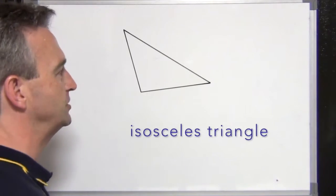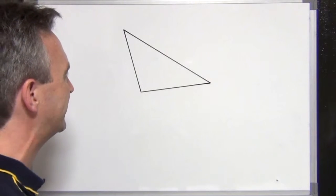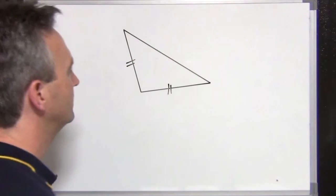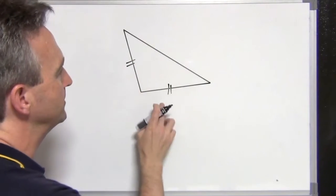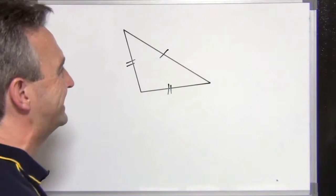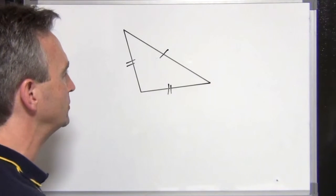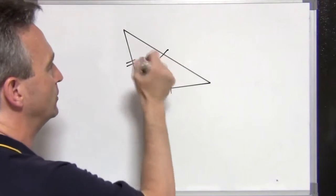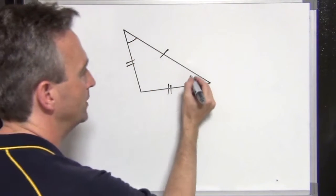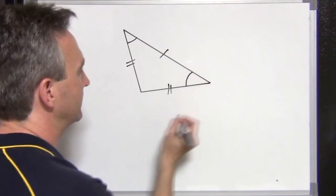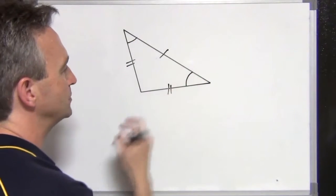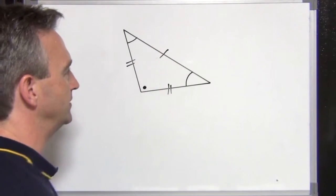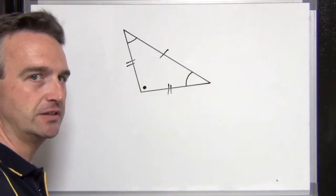Another type of triangle is an isosceles triangle. An isosceles triangle has two sides that are equal. The two equal sides are shown with matching tick marks, and the third side is different. It can be proven for an isosceles triangle that where we have two sides equal, the two base angles are also equal — though we're not going to prove that today. So two sides are equal and two angles are equal, with a different angle and a different side for the third.